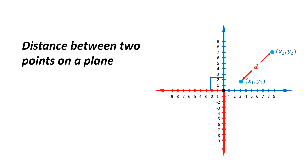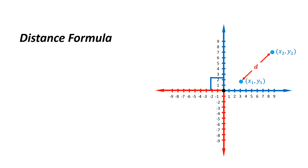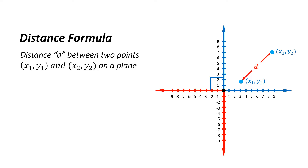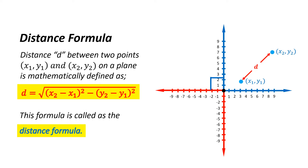Distance between two points on a plane: the distance d between two points (x1, y1) and (x2, y2) on a plane can be found using the distance formula: d equals the square root of the quantity (x2 minus x1) squared plus (y2 minus y1) squared. This is called the distance formula.